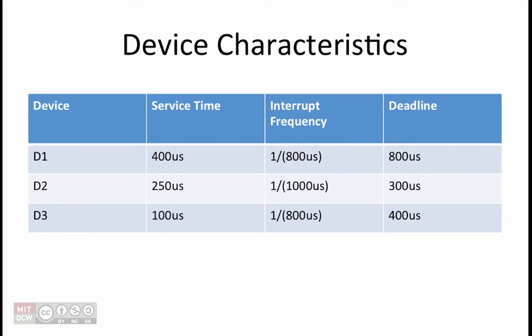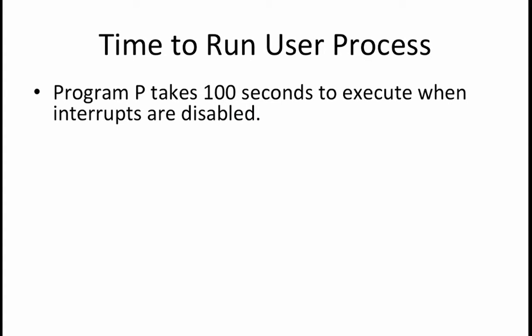For each device, we are given its service time, which is the amount of time it takes to service an interrupt for that particular device. We are given an interrupt frequency, which tells us how frequently the interrupts for that device arrive. You can assume that the first interrupt of each device can arrive at any time. The deadline is the longest amount of time that is allowed between the interrupt request and the completion of the interrupt handler.